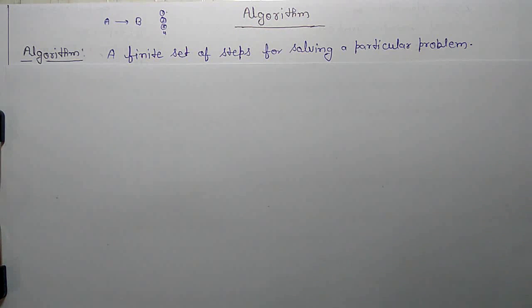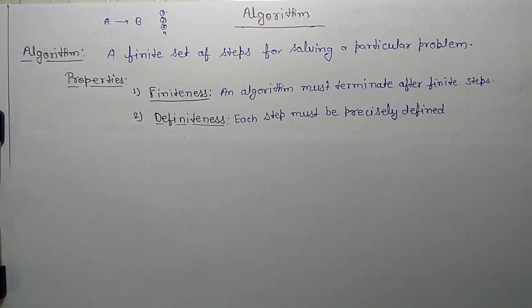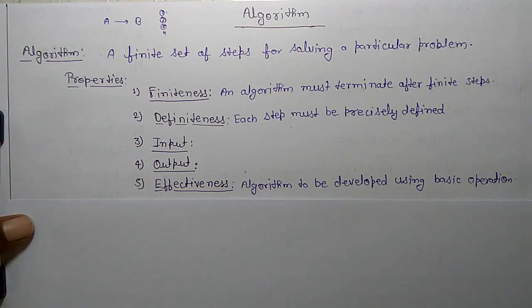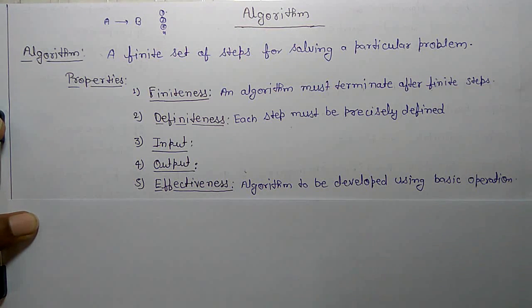The algorithm has properties: finiteness, definiteness, input, output, and effectiveness. Finiteness: an algorithm must terminate after finite steps.